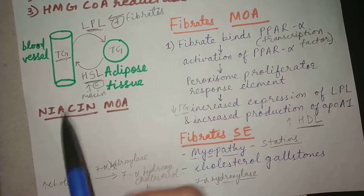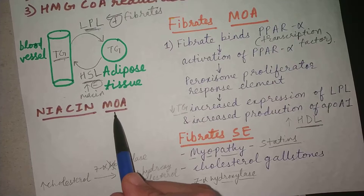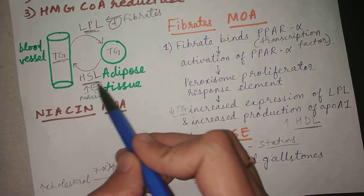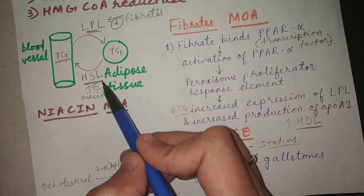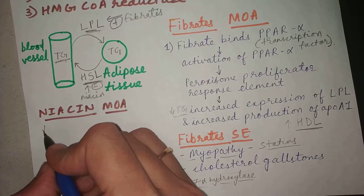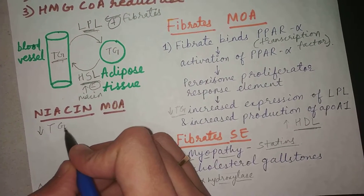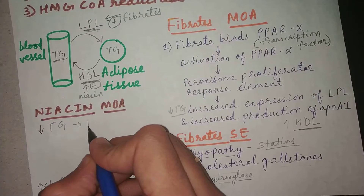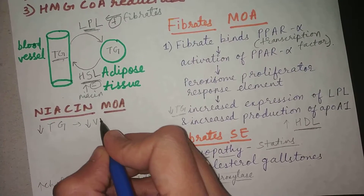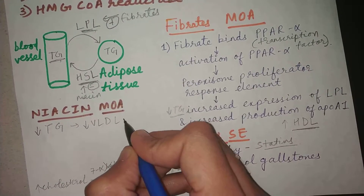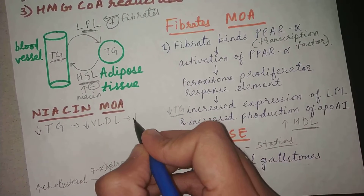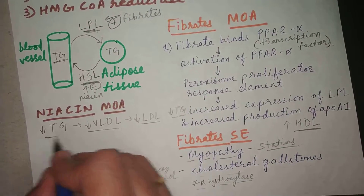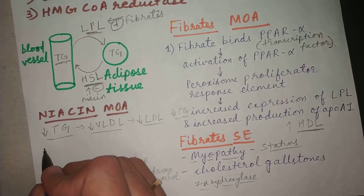Now let's discuss niacin. The mechanism of action of niacin: it inhibits hormone-sensitive lipase, which decreases triglyceride levels. When triglyceride levels decrease, VLDL is reduced, and this subsequently affects LDL levels. That is the simple mechanism of action of niacin.